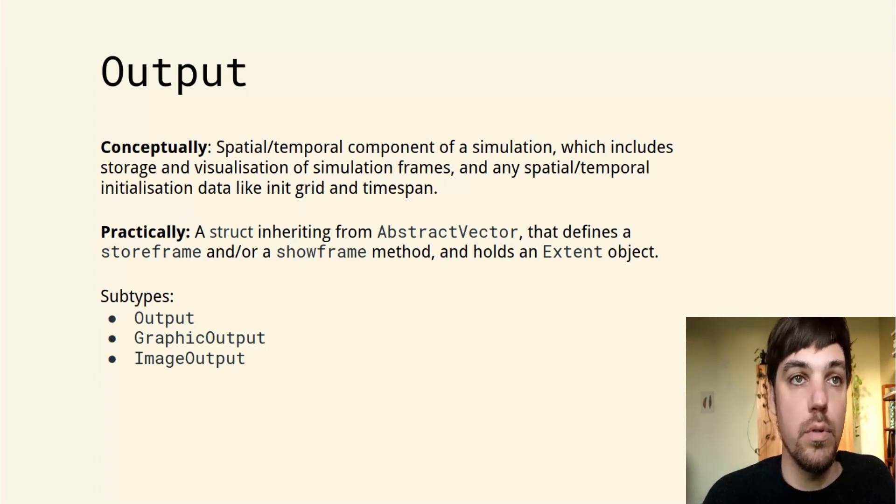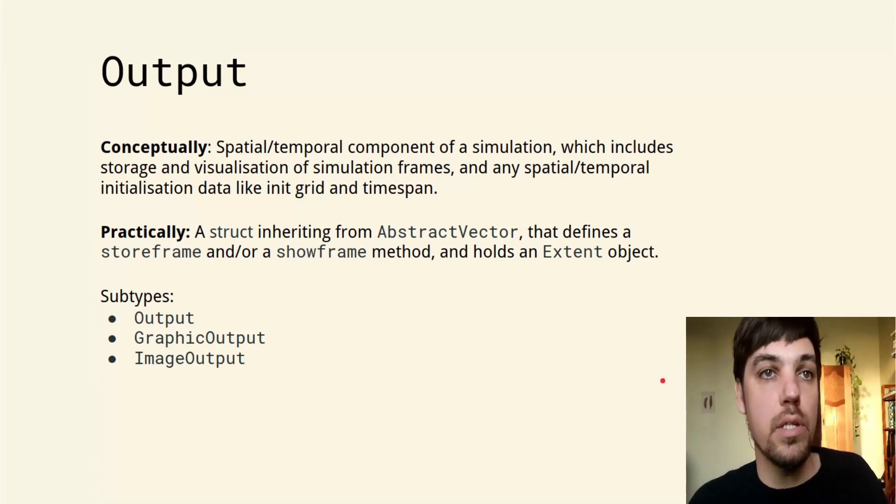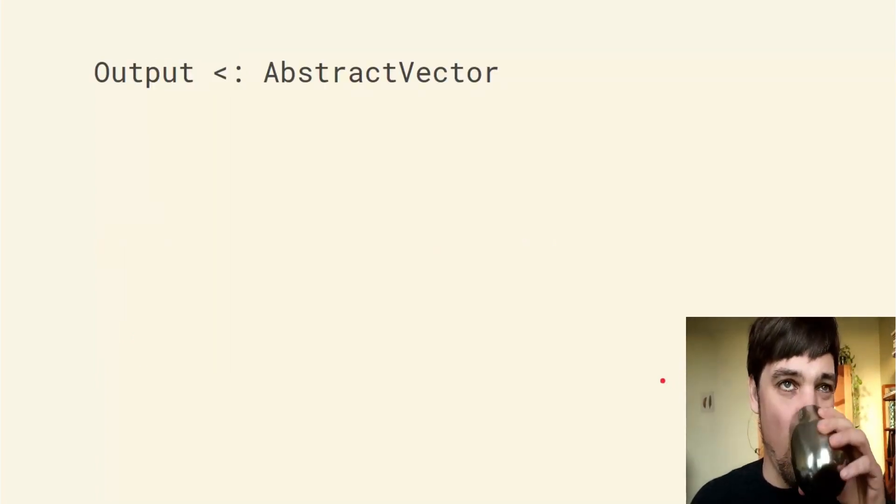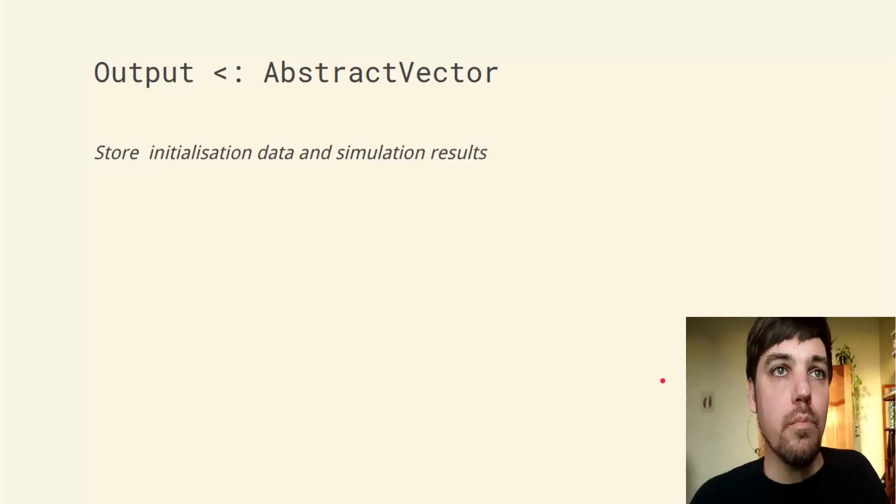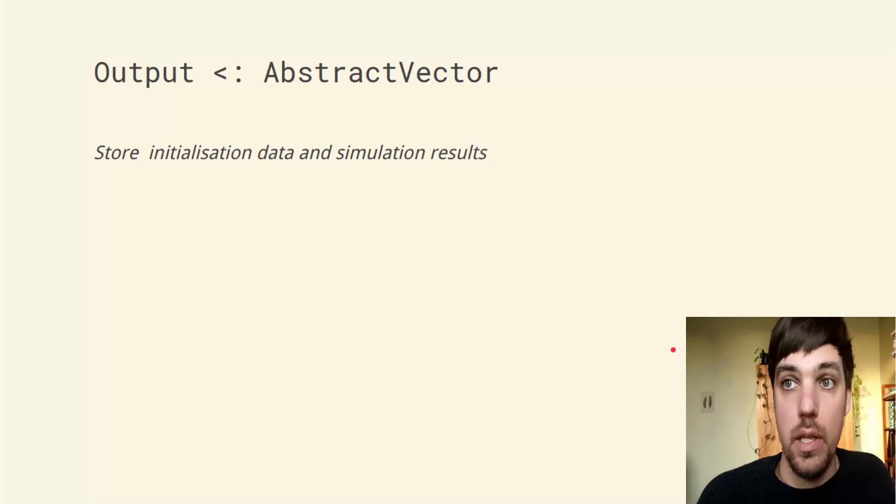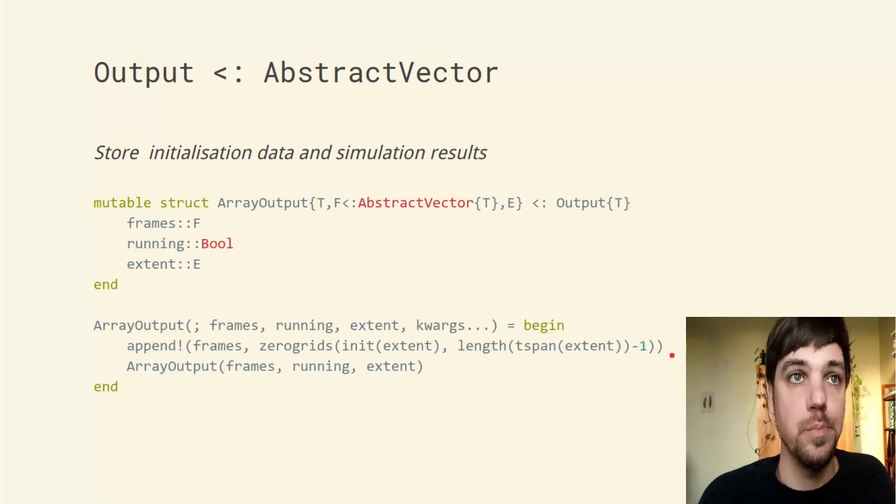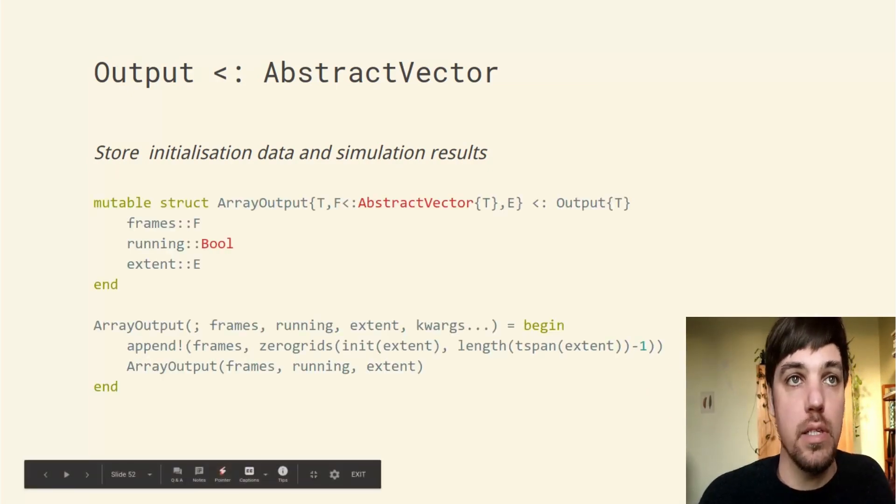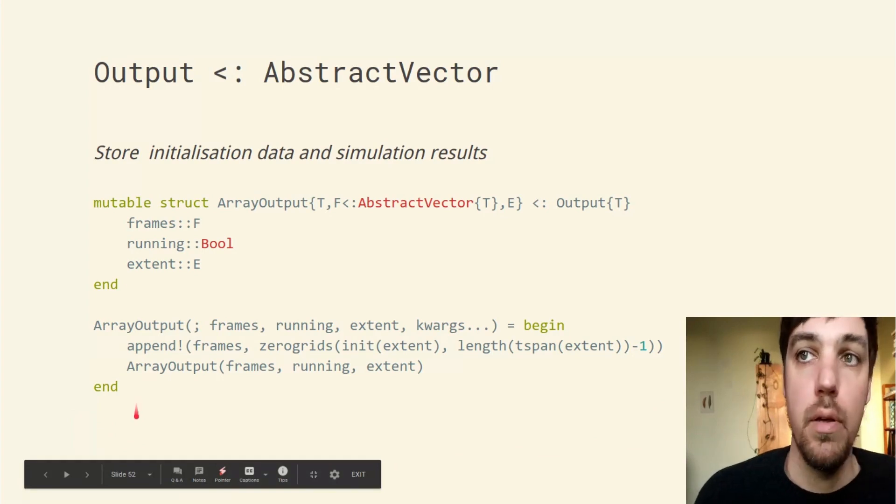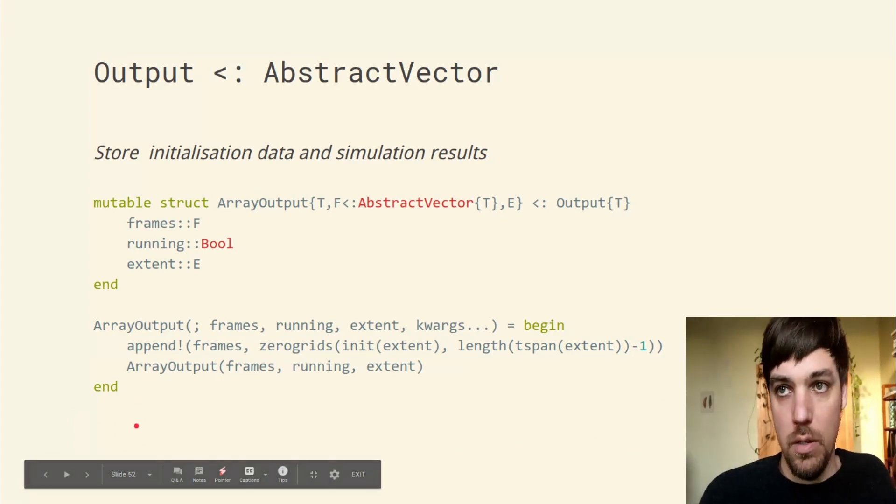These are just standard output, graphic outputs and image outputs. Standard outputs store initialization data and simulation results in some way. The most basic is the array output provided in the package. This is actually the complete definition because the methods are defined in the abstract type.